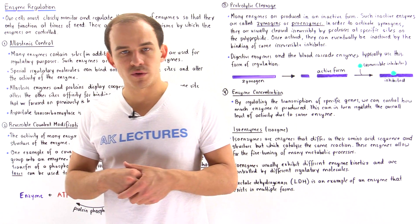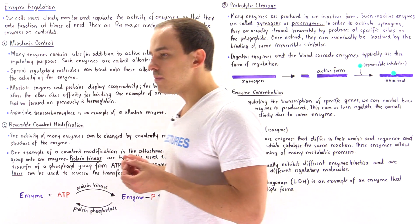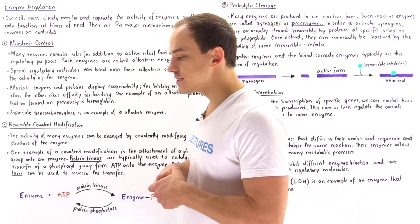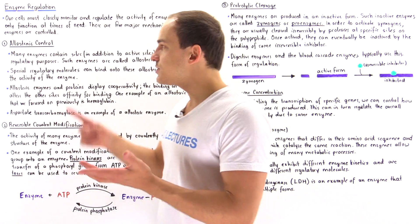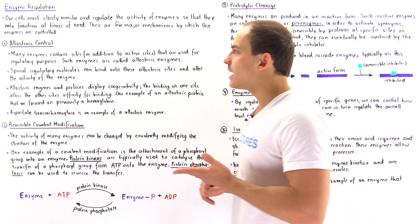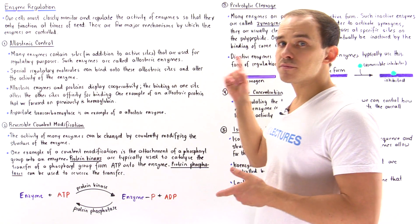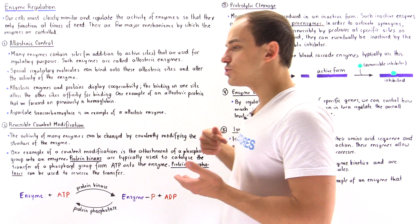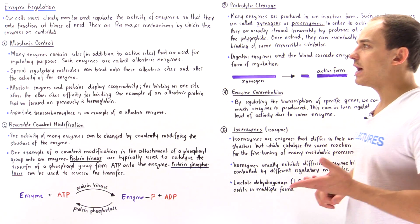The next topic we're going to study is enzyme regulation — how exactly do the cells inside our body monitor, regulate, and control the activity and functionality of all the different types of enzymes? As we'll discuss in this lecture, there are five major mechanisms of control: allosteric control, reversible covalent modification, proteolytic cleavage or proteolytic activation, enzyme concentration, and isoenzymes or isozymes.